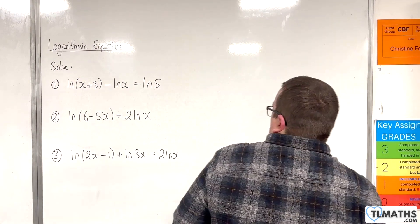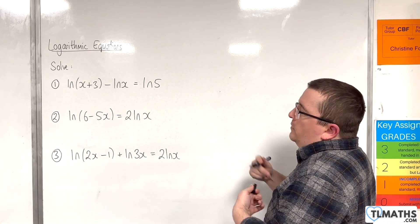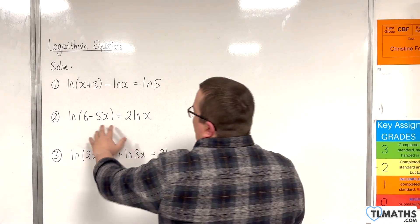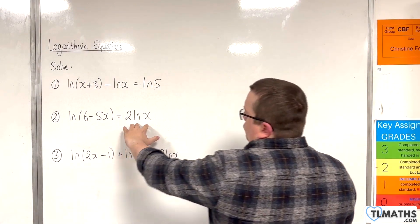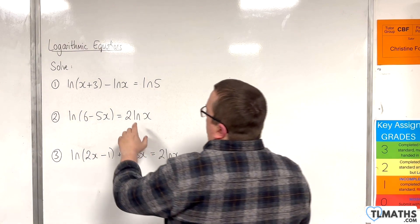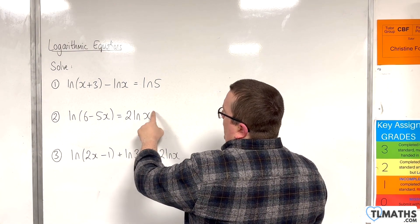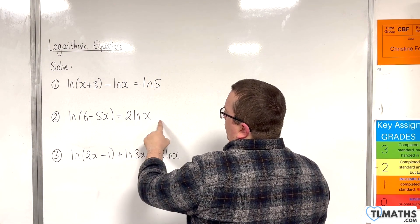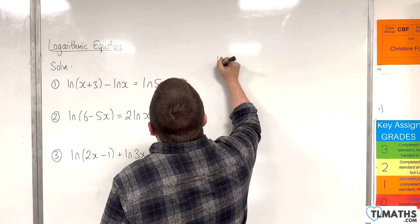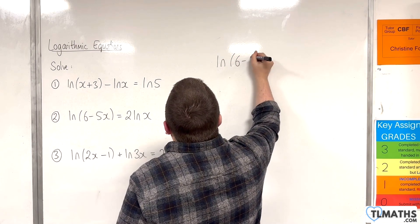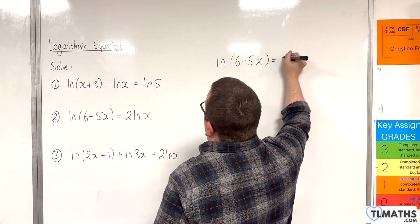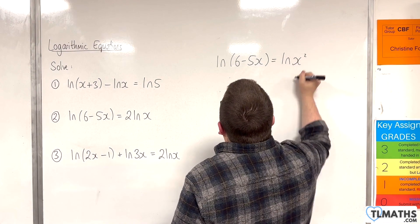For number two, we have the natural log of 6 take away 5x, is equal to 2 times the natural log of x. The first thing to do is bring that 2 up to the power using the power law, so we get the natural log of 6 take away 5x is equal to the natural log of x squared.